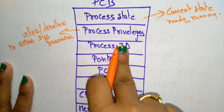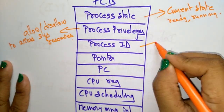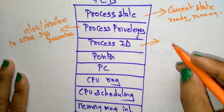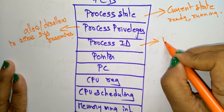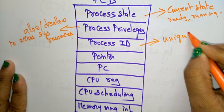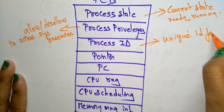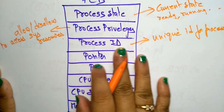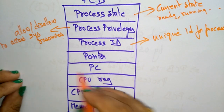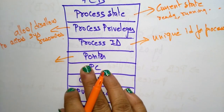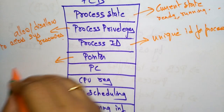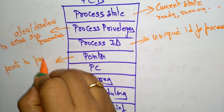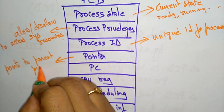Process ID is nothing but a unique ID for each process stored in the operating system, so based on that ID we can identify which process it is. The pointer always points to the parent process.